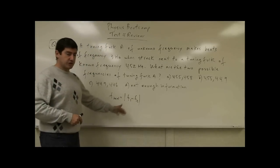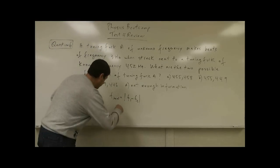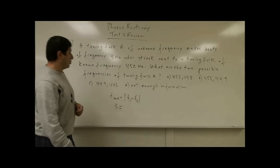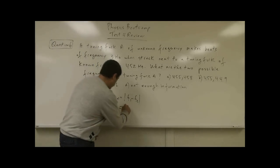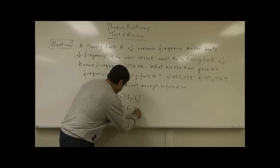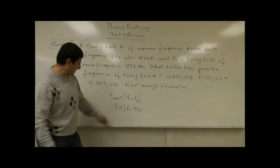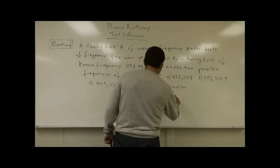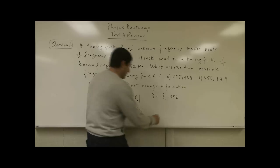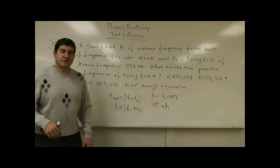So we know that the beat frequency is 3, and the frequency of the second tuning fork is 452. So what are the two possible frequencies? Well, it's going to be 3 equals f1 minus 452, and therefore f1 is going to equal 455. So the frequency of tuning fork A can be 3 Hertz higher than 452.